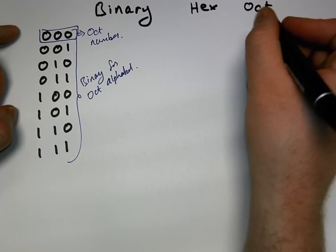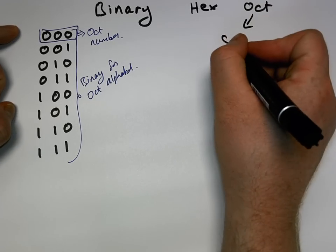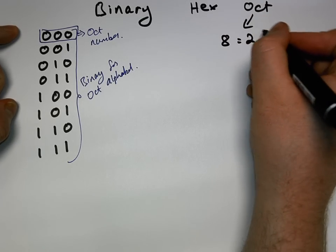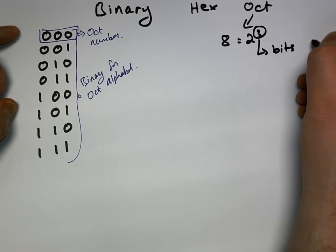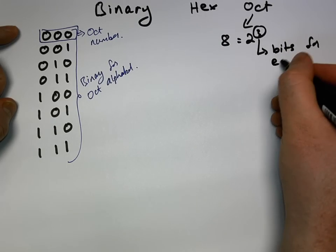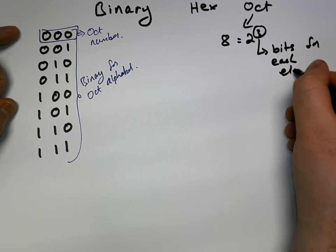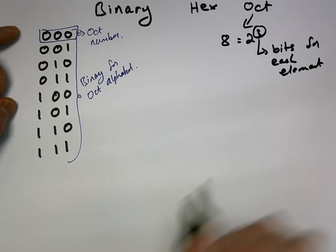In the last one we would have said that octal has eight elements, which is equivalent or equal to two to the power of three. Where this three represents the number of bits for each element from the alphabet.